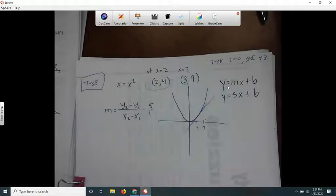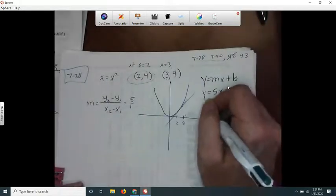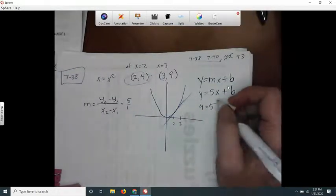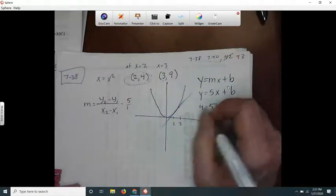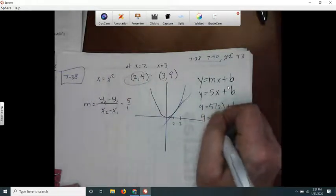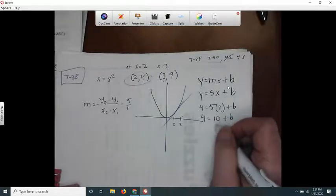If that's y, what was x? x was 2. So 4 equals 10 plus b, so negative 6 is b.